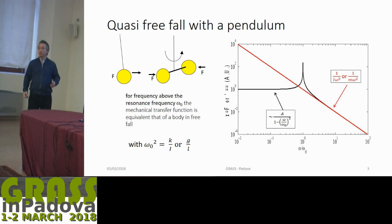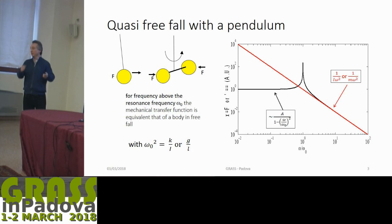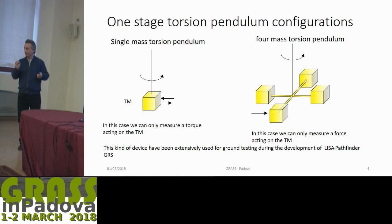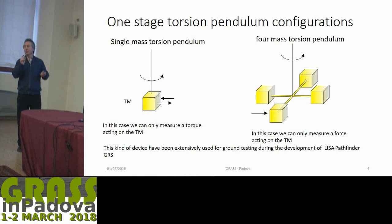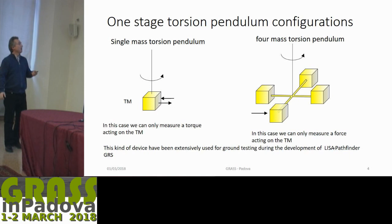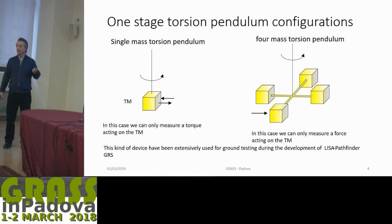We can mimic a free-falling mass with the torsion pendulum above the resonance frequency. Above the resonance frequency, the transfer function is one over the square of the frequency, which is typical of a free-falling mass. On a single-stage torsion pendulum we can only measure torque around the fiber, while with a four-mass torsion pendulum we can measure force as a translation — the rotation along the central fiber, since radius times angle for small angles is a translation.